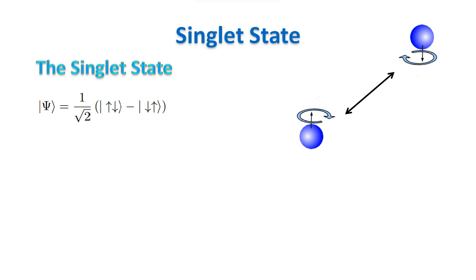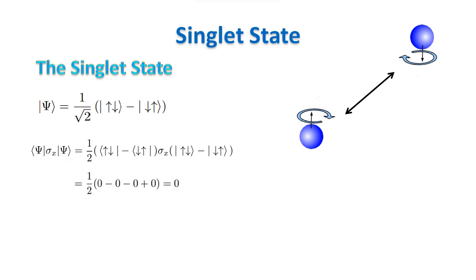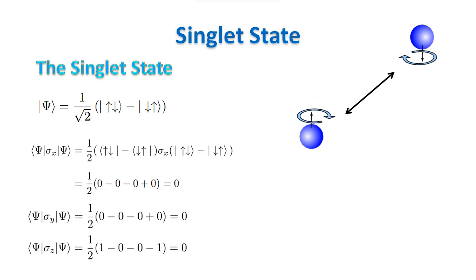Moreover, if we evaluate the expectation value of sigma x, we get zero. You know now how to evaluate this quantity because you know how sigma x acts on the basis vectors. The same is true with sigma y and z. This is a new thing and a new clue that two entangled particles form a system with new characteristics.